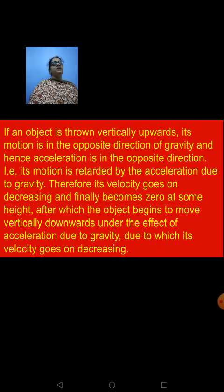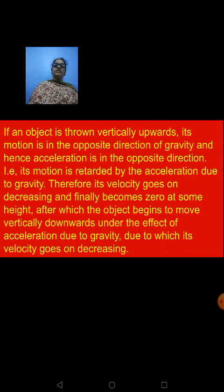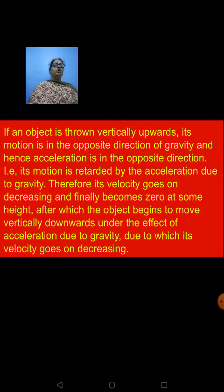Whenever you are throwing an object in an upward direction, its motion is in the opposite direction of gravity. It is working against gravity, moving against gravity. And hence, the acceleration is shown in the opposite direction. When the object is going up, acceleration is in the upward direction. When the object is coming towards the surface of the earth, acceleration is seen downwards.